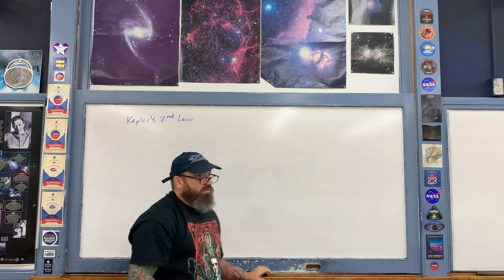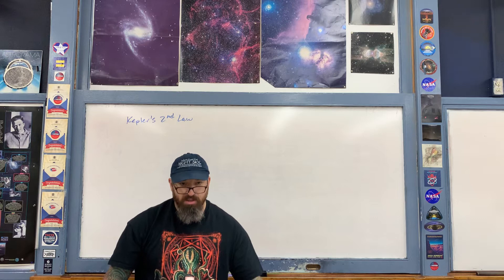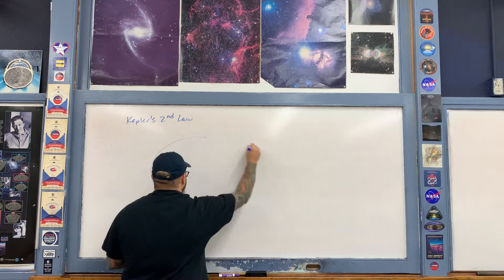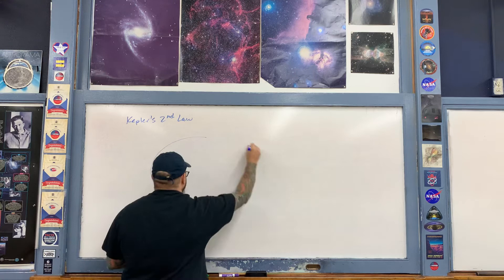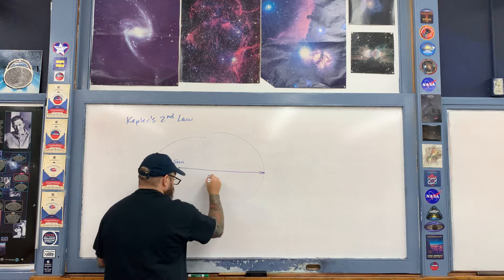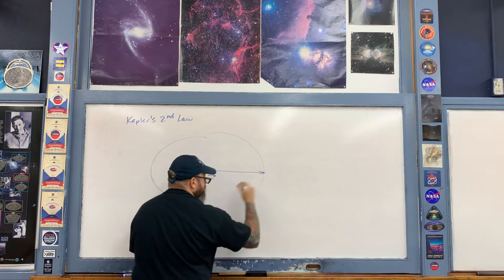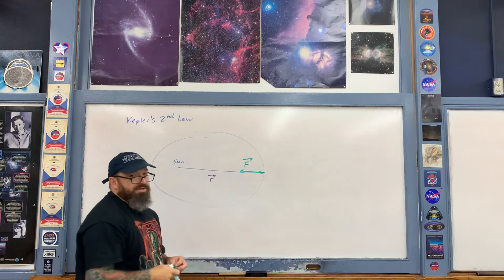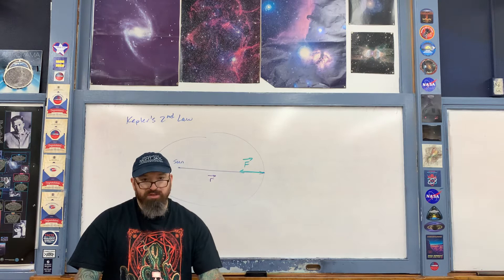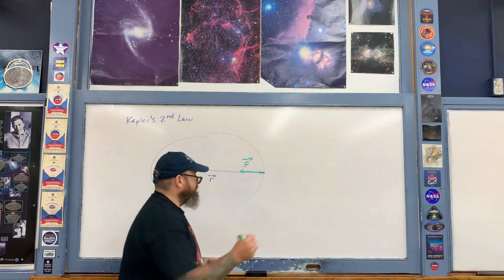Does the sun exert a gravitational torque on the planet as it orbits? No. The moment arm goes from the sun to the planet, and the gravitational force vector points back toward the sun — so there is a 180-degree angle between them. Regardless of where the planet is on the ellipse, the torque equals r F sin(180°) = 0. No torque is exerted on the planet as it orbits the sun.